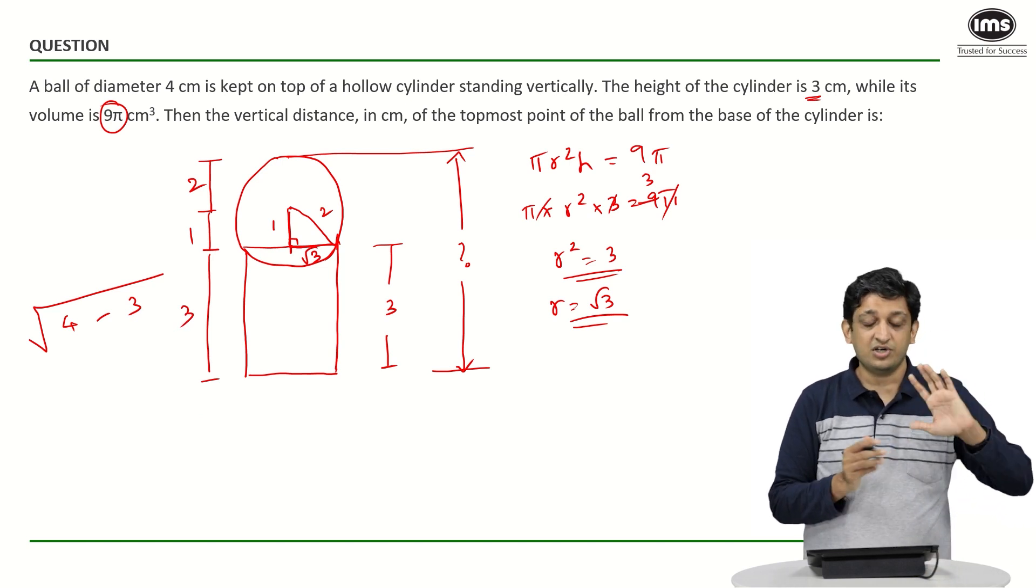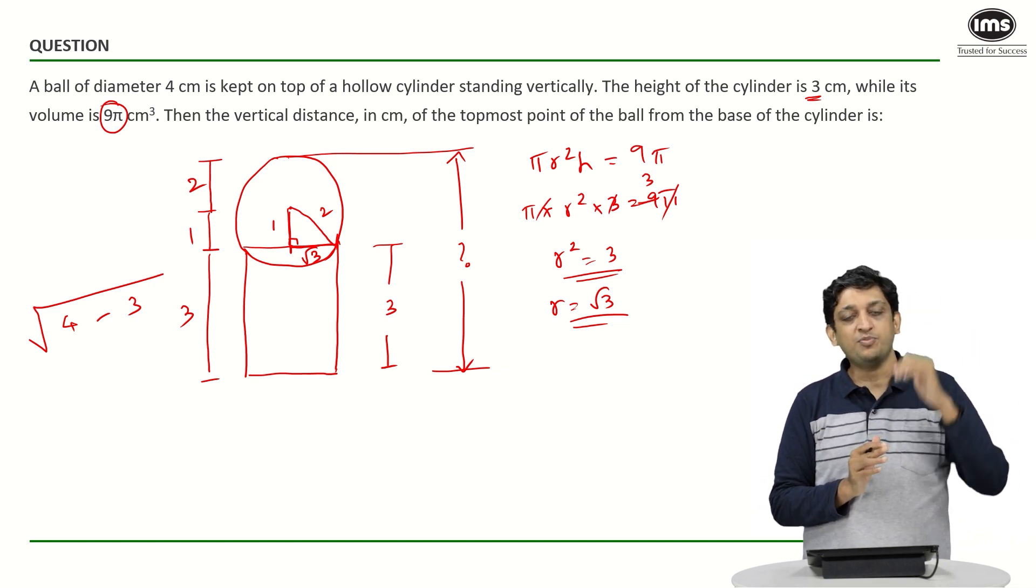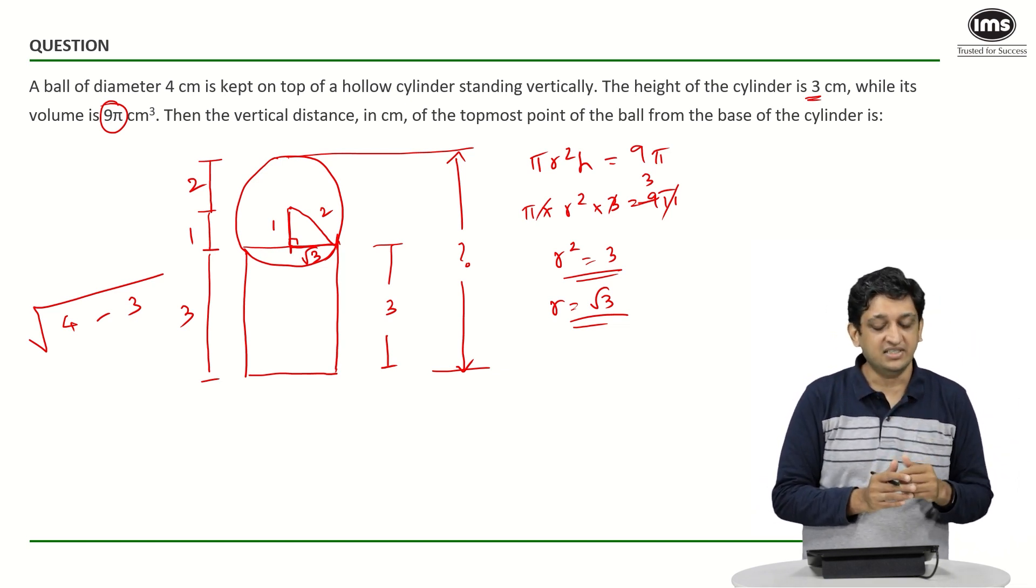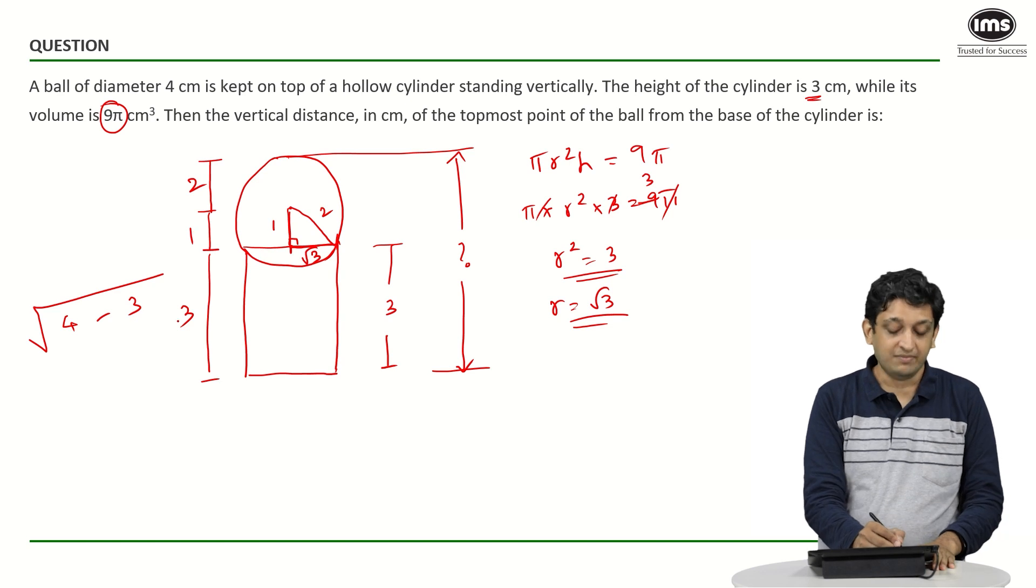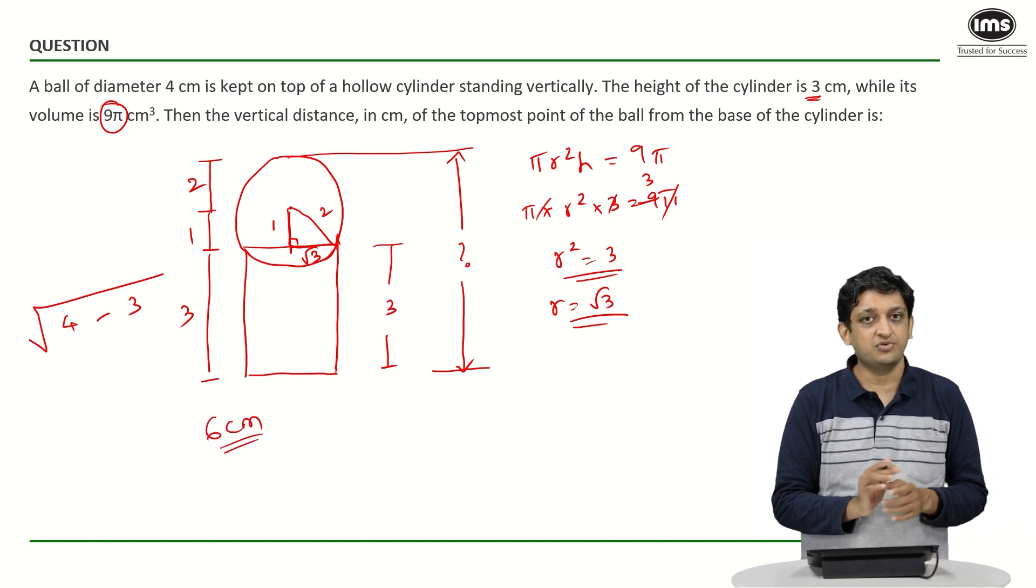So what is the distance or what is the length or what is the height we can say of the topmost point of the sphere from the base of the cylinder. This will be nothing but 2 plus 1 plus 3 that is 6 centimetres. And so our answer to this question is going to be 6.